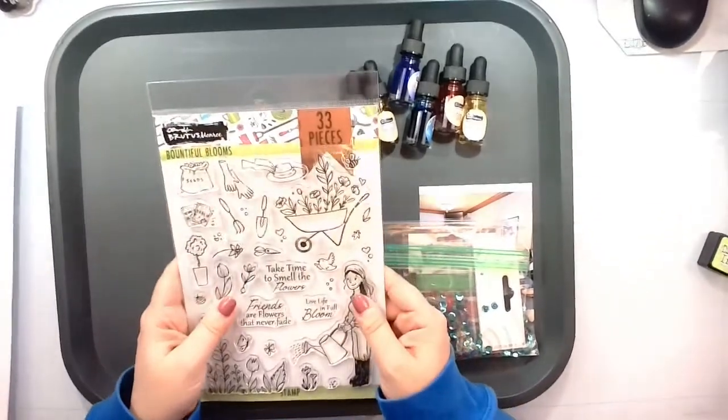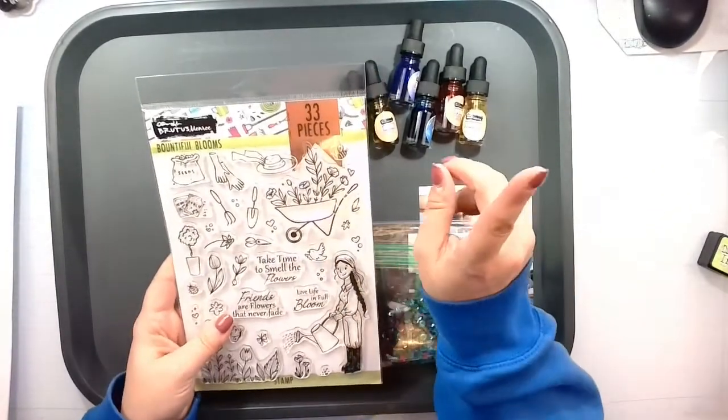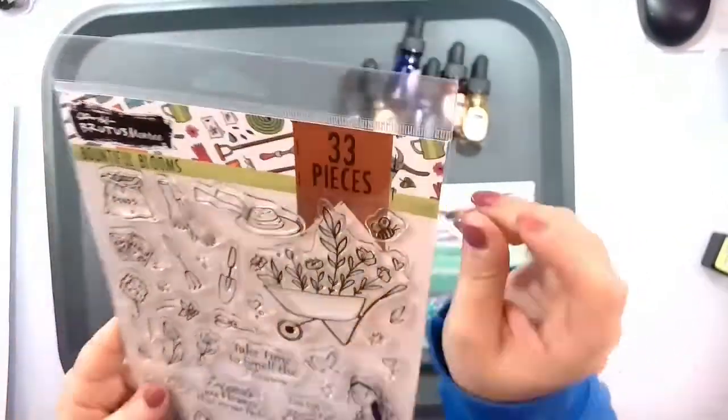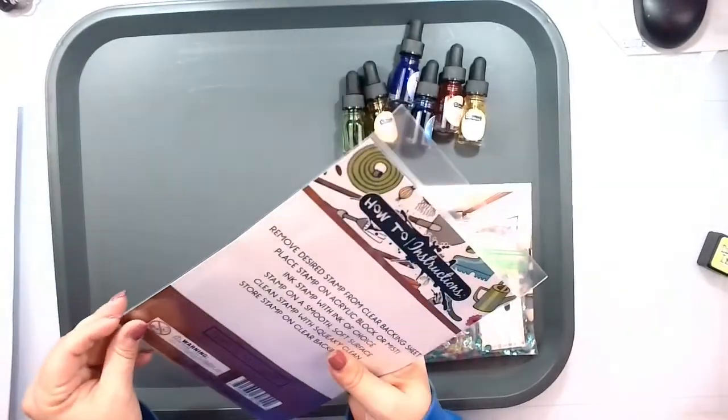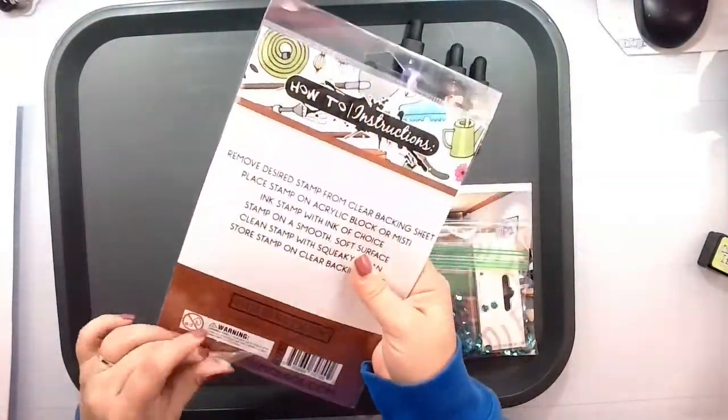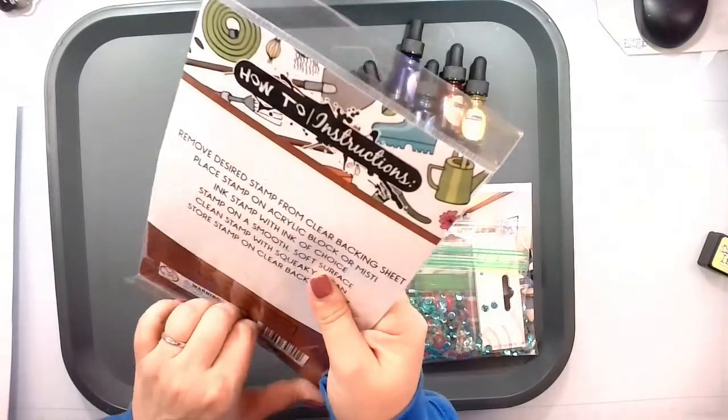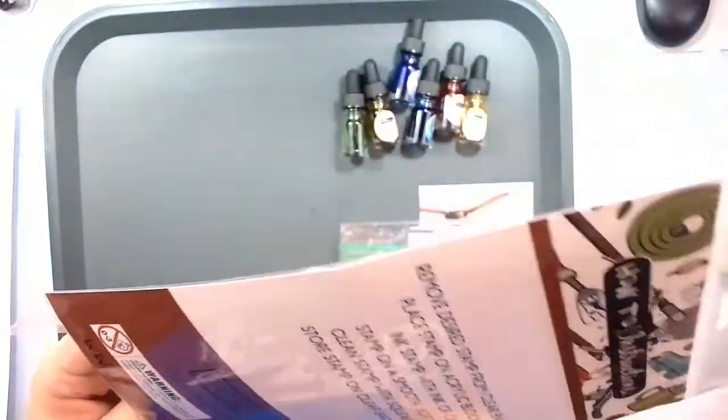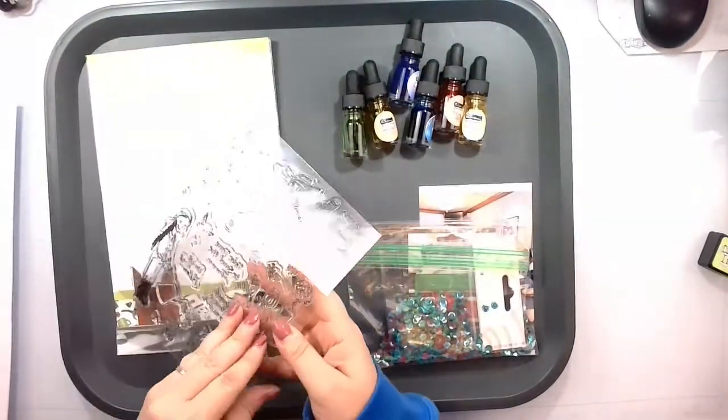And it's just like Brutus Monroe knew, because there's a B. And they knew I needed a B stamp in my life. So let's go ahead and the SKU on this is BRU 7902. I will try to have everything listed down below.